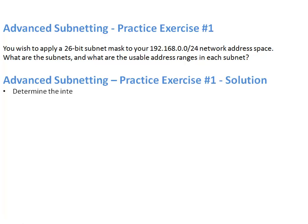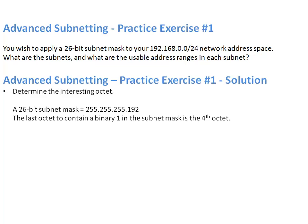How did you do? Let's take a look at the answer. Step 1 is to determine the interesting octet. With a 26-bit subnet mask, that looks like 255.255.255.192. The last octet to contain a 1 is the fourth octet — we have 1, 1, 0, 0, 0, 0, 0, 0 as the binary bits in that last octet. So we've determined that the fourth octet is the interesting octet.